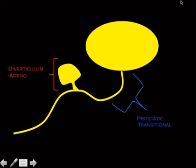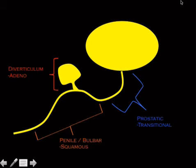The proximal urethra — the part near the prostate — is closest to the bladder, so it gets the same cancer as the bladder: transitional cell carcinoma. The distal penile urethra gets squamous cell carcinoma. So to summarize urethral cancers: proximal = transitional cell, and distal = squamous cell.